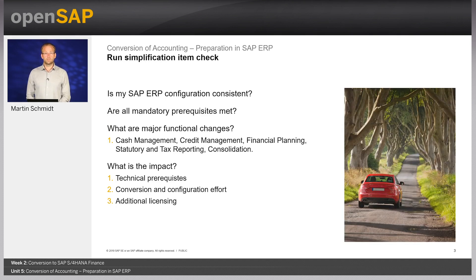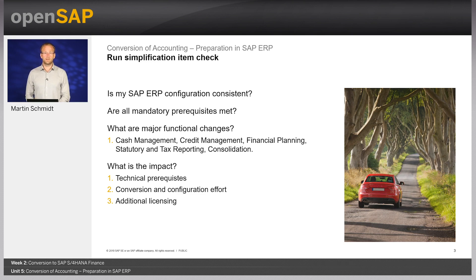A good starting point for finance-related preparation activities is to run the simplification item check. It will examine consistency of your company code, ledger, and controlling area settings, and will also inspect asset accounting configuration and check if closing activities were completed properly. The results help you answer questions such as: Is my SAP ERP configuration consistent? Are all mandatory prerequisites met? What do I need to change in my customizing before starting with conversion?